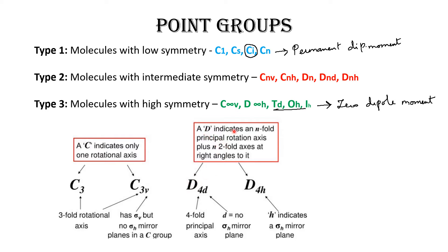D indicates an N-fold principal rotation axis plus N 2-fold axes (C2). A C2 axis at right angles to the principal axis will also be there. If these two are present, that is D.